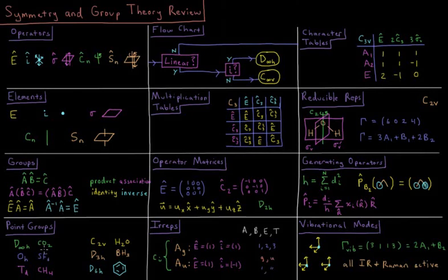The type of group that these operations form is called a point group and it is a concise label for the type of symmetry observed in a given molecule. Things like CO2 have D infinity H, SF6 OH, CH4 TD, H2O C2V, BH3 D3H, and benzene D6H.